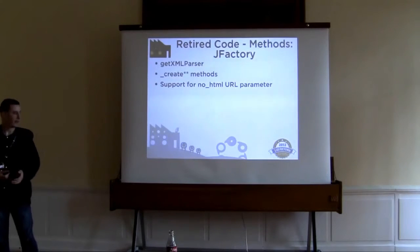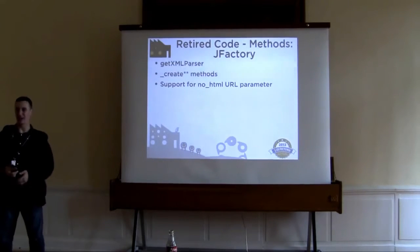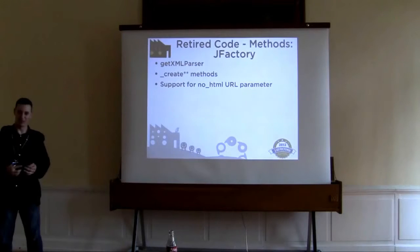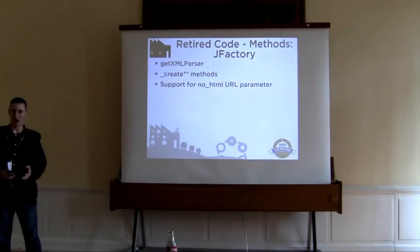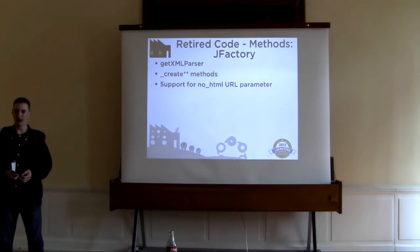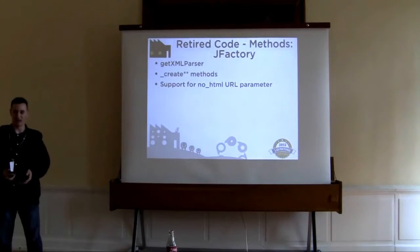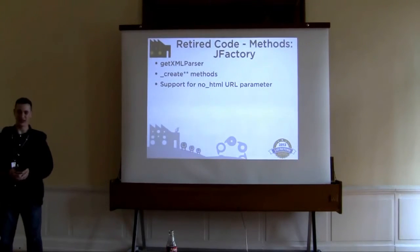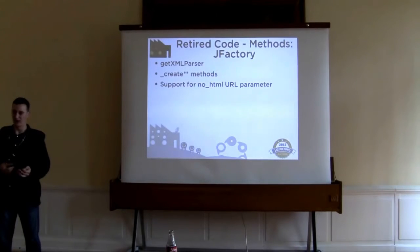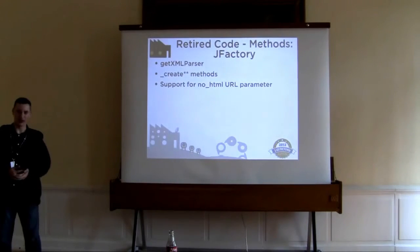In JFactory, we've removed the getXMLParser method. It's replaced by getFeedParser for RSS feeds, with no direct replacement for other XML types. All the underscore create methods were replaced by non-underscored methods. And in the createDocument method, there existed support for a 1.0 legacy feature — the noHTML parameter in the URL — and that has been completely removed.